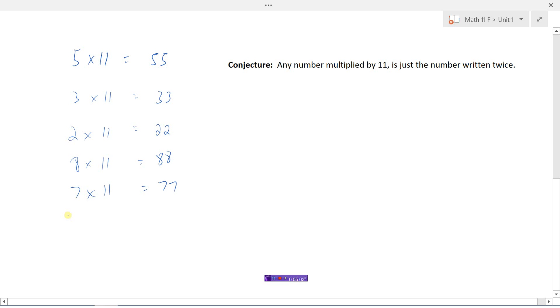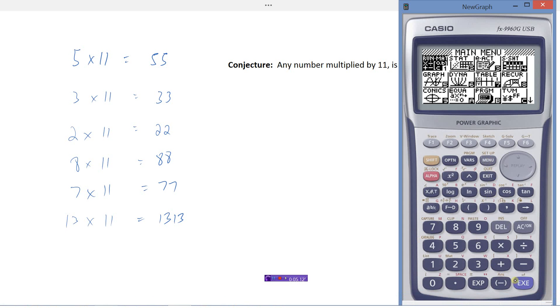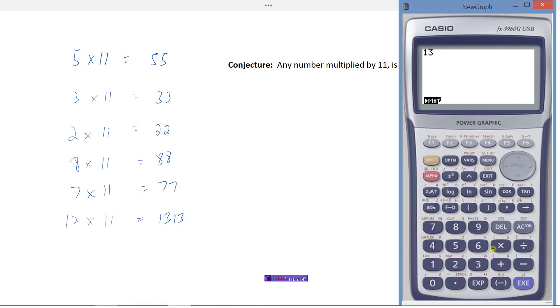Like what if I went to 13 by 11? Then according to my conjecture this should be 13, 13. Let's see what happens here. I got 13 times 11.